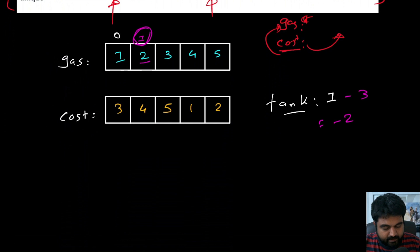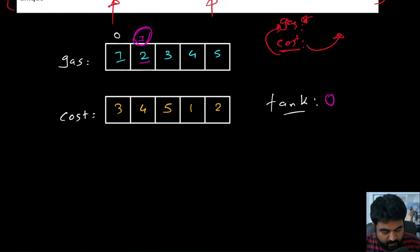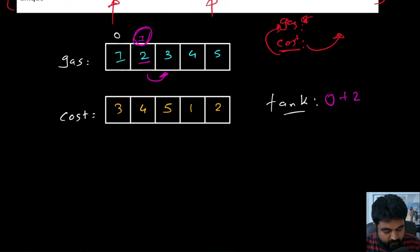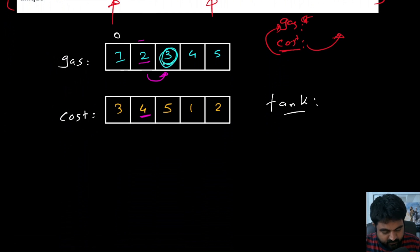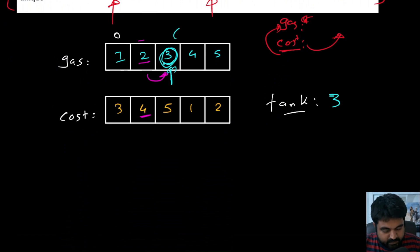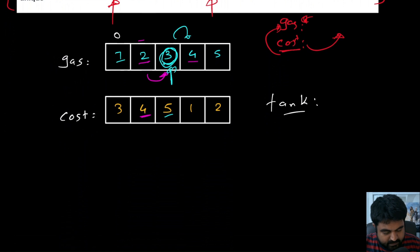Starting from index one: tank starts at zero, we fill two units, but to get to index three costs four units — two minus four is minus two, so we cannot reach the next station. Index one also does not work. Starting from index two: tank is zero, we fill three, but the cost to the next station is five — three minus five is negative, so index two does not work either.